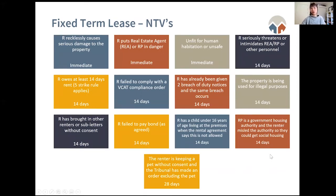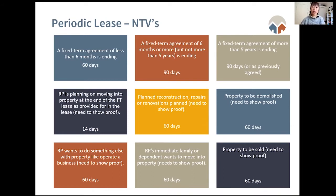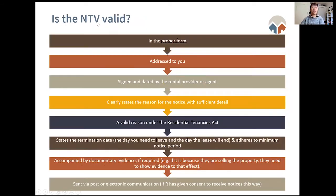The rental provider can only give a notice to vacate for a reason specified in the Residential Tenancies Act — they can't give it because they don't like you or for personal reasons. If you're on a periodic lease (month-by-month), notice periods are longer, giving you more time to find alternative accommodation. For example, if a fixed term agreement of less than six months is ending, the rental provider can give 60 days notice, giving you two months to find another property.